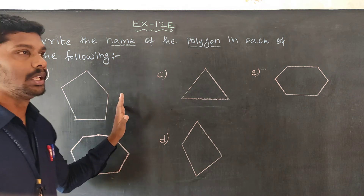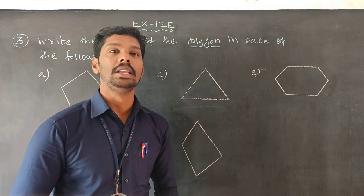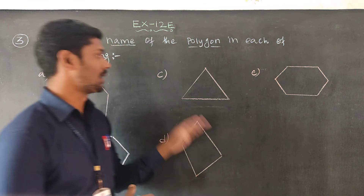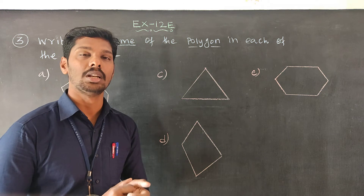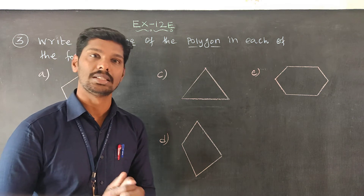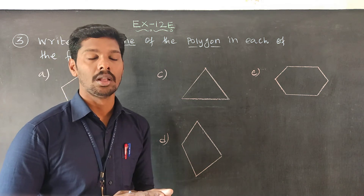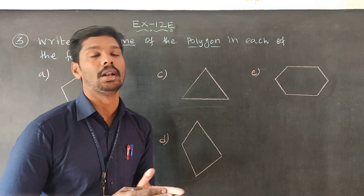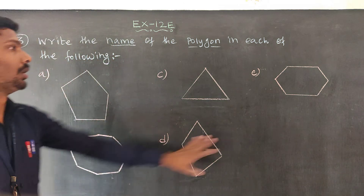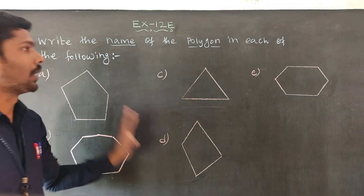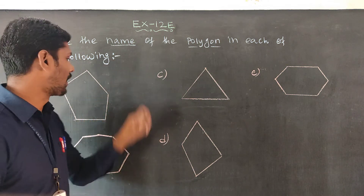This is the name of the polygon. There are three sides, four sides, five sides, six sides, seven sides. He can write the name of the polygon. The five sides will be written. There are three sides and ten sides. If you have five sides, please write the name of the polygon.